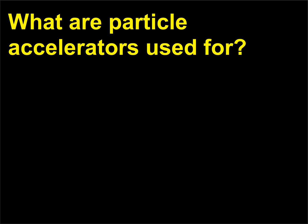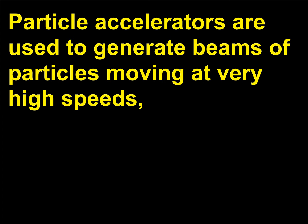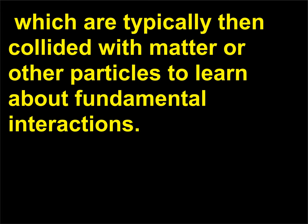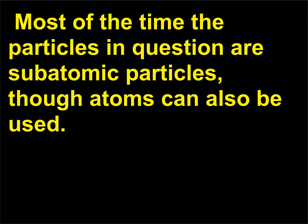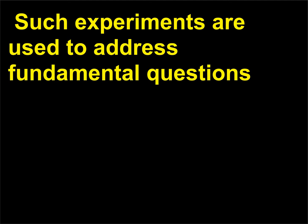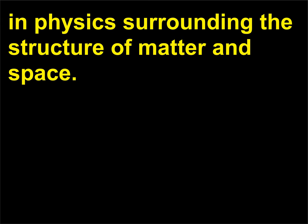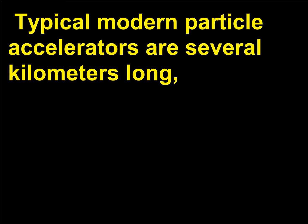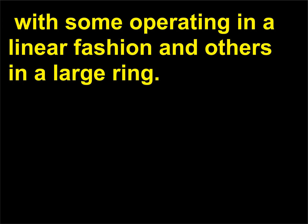What are particle accelerators used for? Particle accelerators are used to generate beams of particles moving at very high speeds, which are typically then collided with matter or other particles to learn about fundamental interactions. Most of the time the particles in question are subatomic particles, though atoms can also be used. Such experiments are used to address fundamental questions in physics surrounding the structure of matter and space. Typical modern particle accelerators are several kilometers long, with some operating in a linear fashion and others in a large ring.